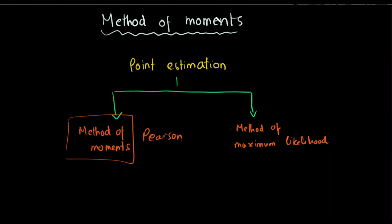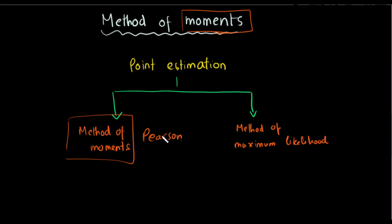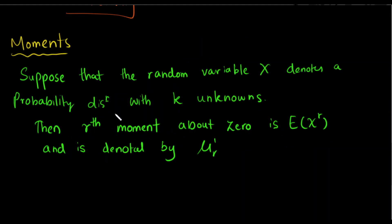In this method of moments, we define the movements. We can define the movements for a random variable x. We can define the probability distribution with k unknown parameters. The expected value of x to the power r is used.